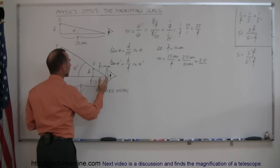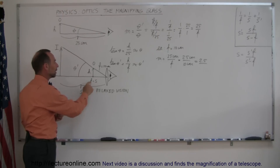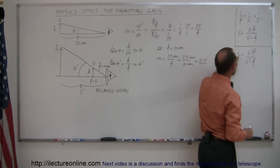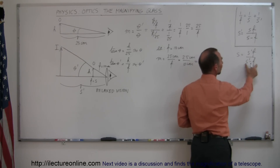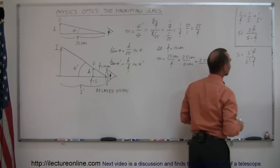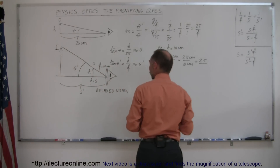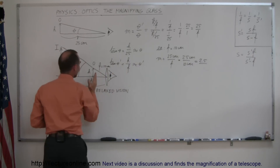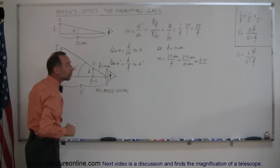What relaxed vision really means is that you're going to place the object at or just very near the focal point. If s is very close to f and we go back to the lens equation and solve it for s, we get s equals s prime f divided by s prime minus f. If s is very close to f then s prime minus f is almost zero, and anything divided by zero becomes infinite — which means that if you put the object very close to the focal point the image will be formed very far away, so you can look at the image with relaxed vision.